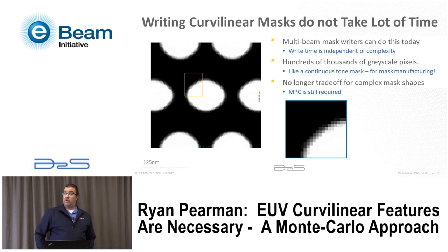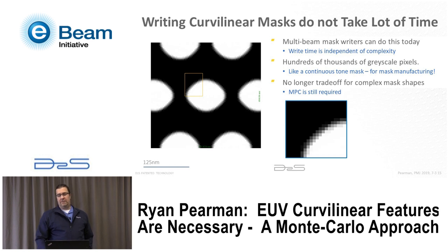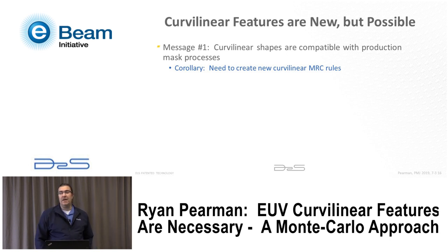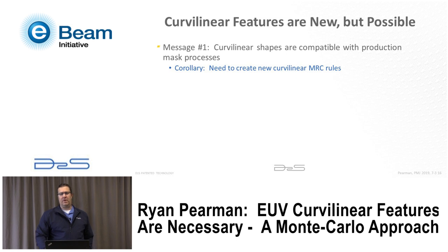If you can write using this new tool, there's no reason to go Manhattan — we should be looking at whether a change to curvilinear shapes would be beneficial today. MPC is still required for these features, just as it would be for a VSB tool, though the kind of MPC differs between curvilinear and rectilinear. The first message is: curvilinear shapes can be done today and are compatible with the processes. The main thing missing is the need to create new mask rule checks to reliably manufacture these shapes, which the industry can move towards very quickly.